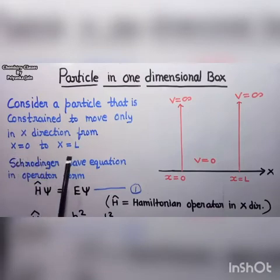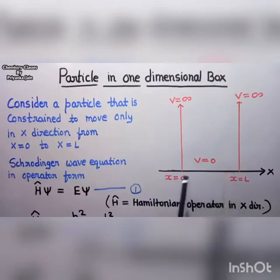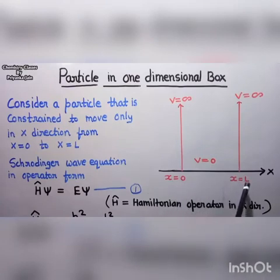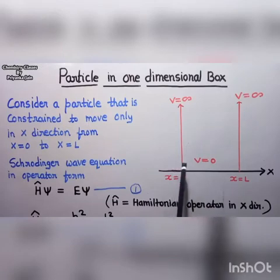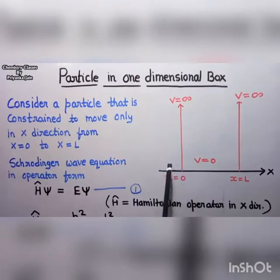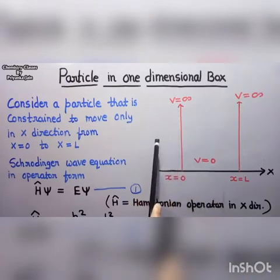Consider a particle that is constrained to move only in the x direction from x equal to 0 to x equal to l. This is the x axis and the particle moves in the x direction only. The boundary of this box is at x equal to 0 and x equal to l. The particle moves between the two boundaries only along the x axis. The particle moving inside the box cannot come outside the box. So the probability of finding the particle outside the box is 0. The potential energy inside the box will be 0.